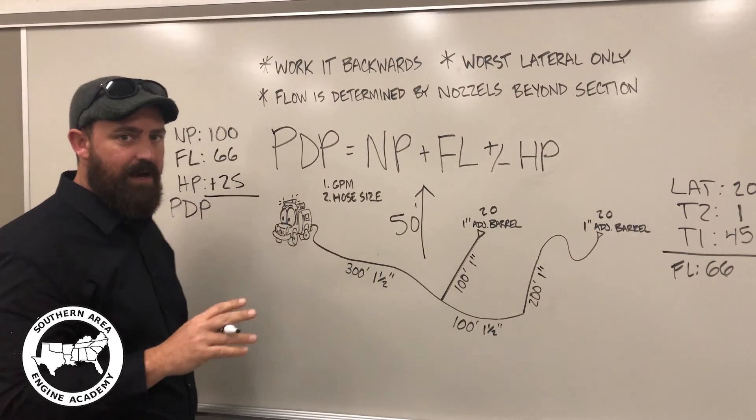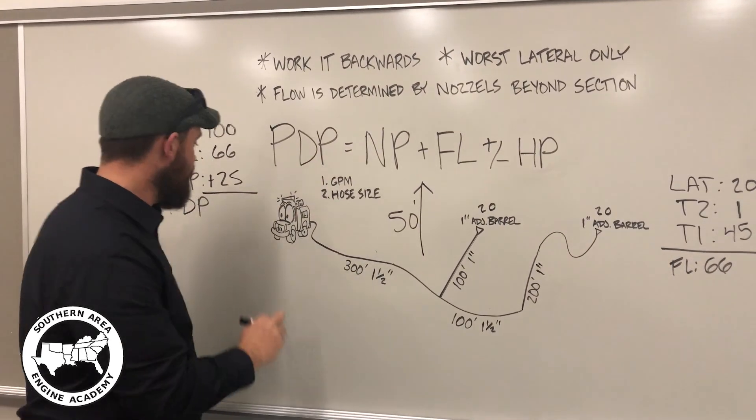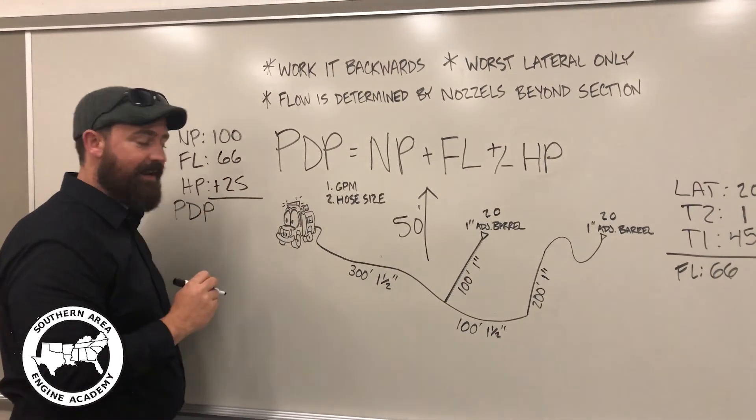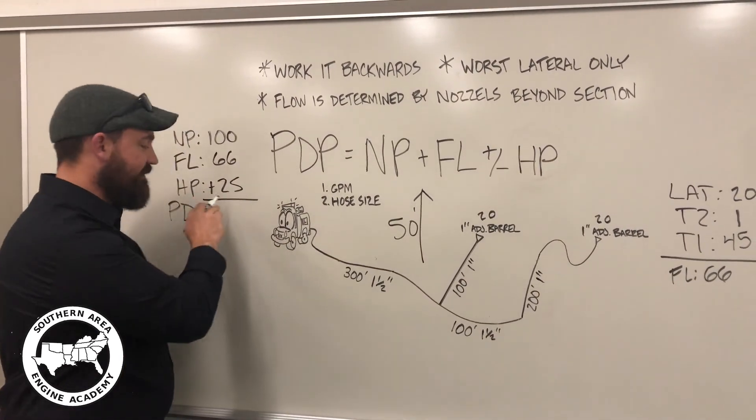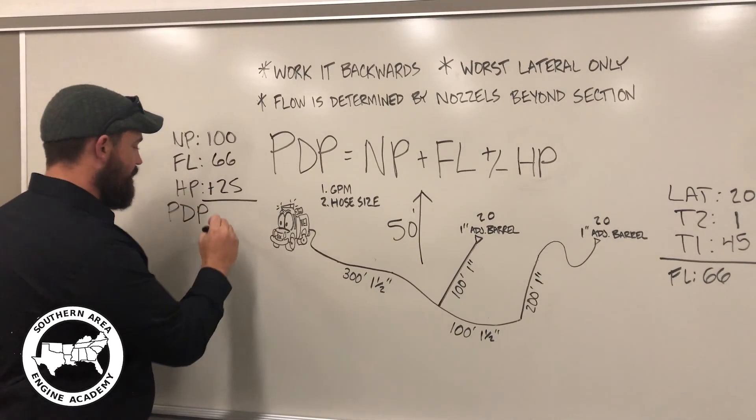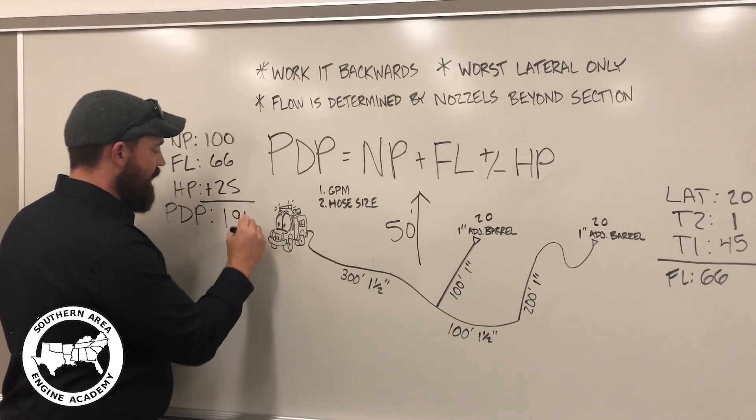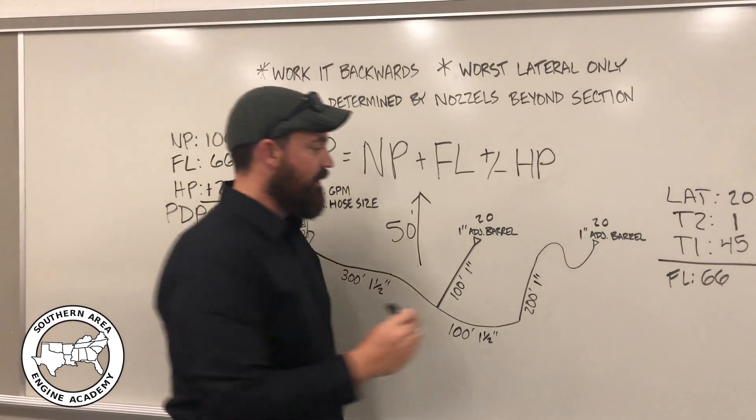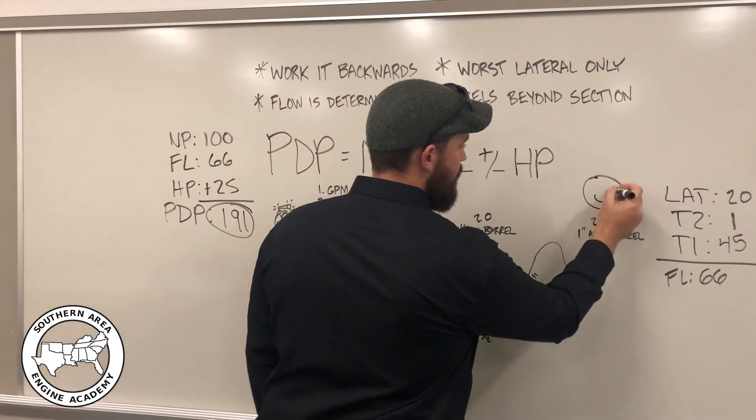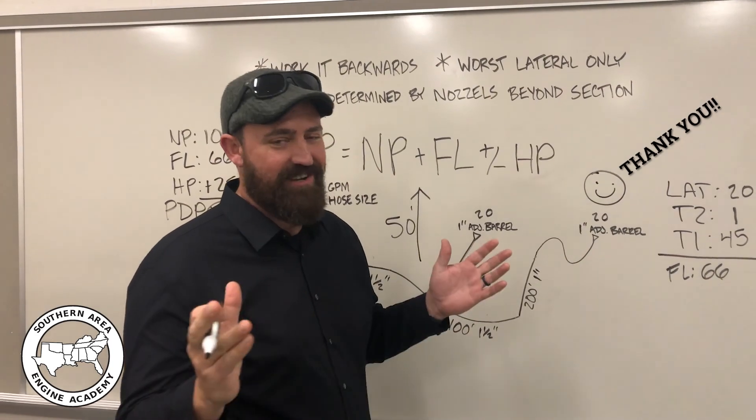Now what will mess some people up when they're writing this down is when the hose lay is going downhill, they'll forget to put a little minus sign here and end up adding that together. And it'll make you way off. So, in this case, we're going uphill, so we're going to add the 25 pounds. For a total pump discharge pressure of 191 psi, it's what we're going to pump at our truck to ensure that we have happy firefighters at the end of our hose lay. And it's just that easy.